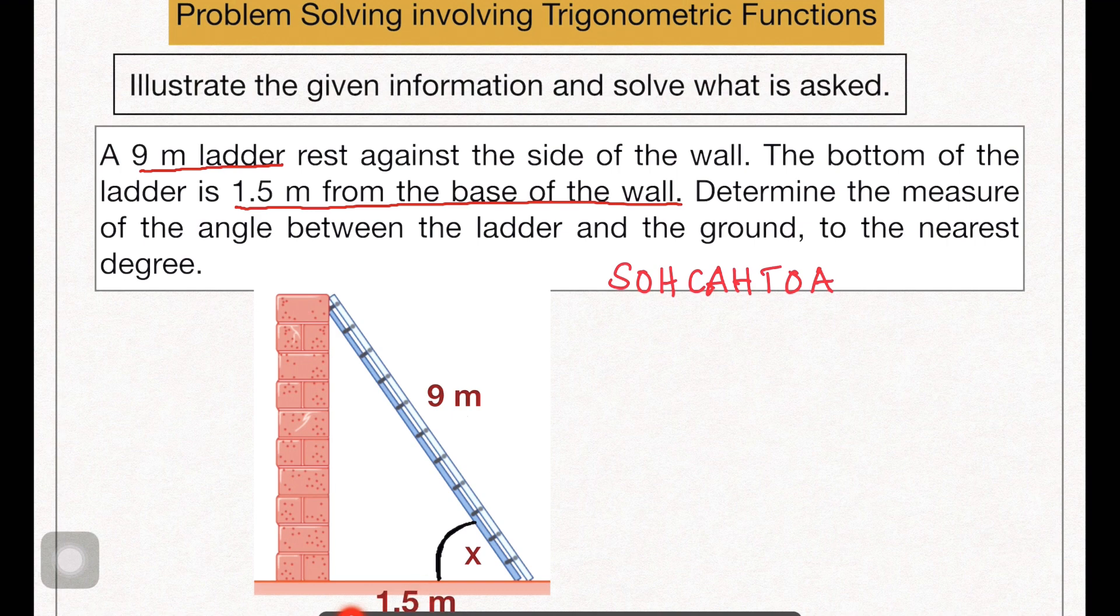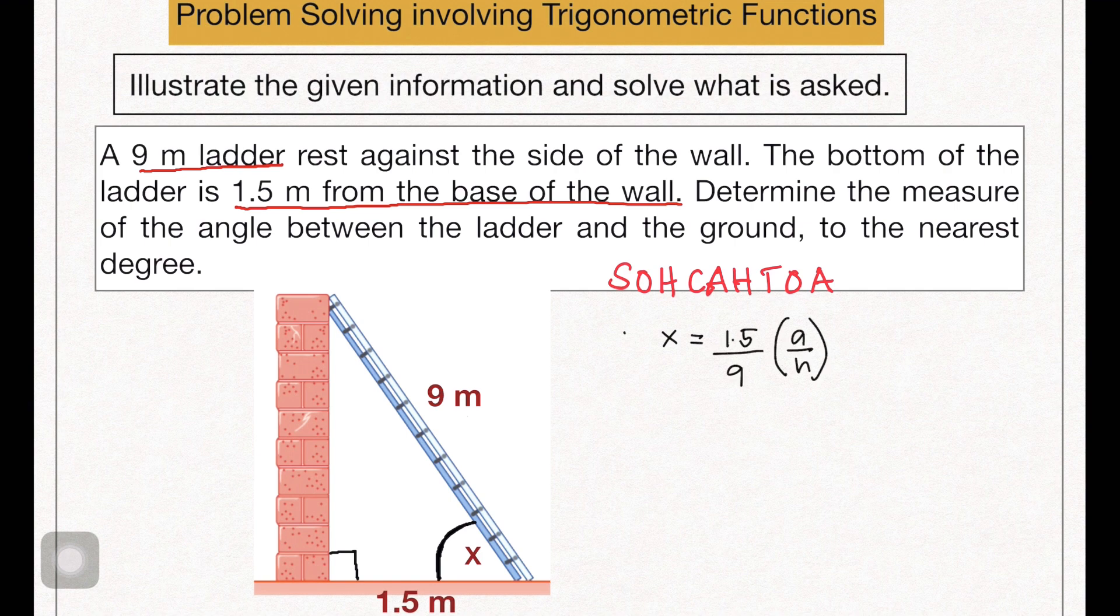And this nine meter here is opposite to the right angle and therefore, this is the hypotenuse. So in that case, x is 1.5 over 9 which is adjacent over hypotenuse. Therefore, it's cosine.